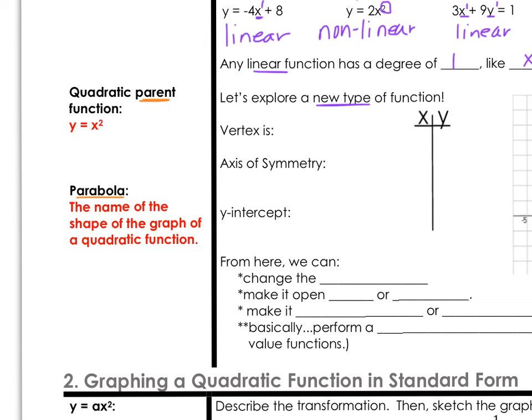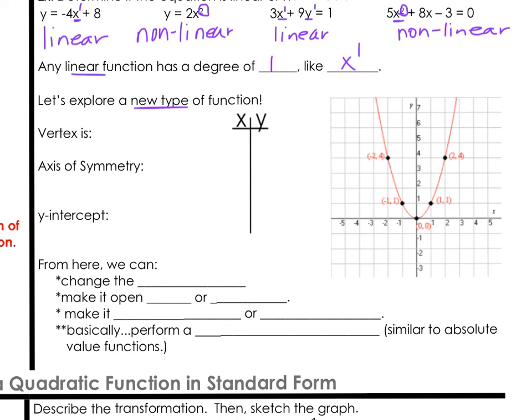Parabola is actually the name of the shape of the graph of a quadratic function. As you can see, it's not a straight line — it has kind of a curve or a nonlinear shape to it. There are some similarities to absolute value functions from chapter 2. Notice at the very bottom, that turning point or vertex is at (0, 0), just like it was for absolute value.